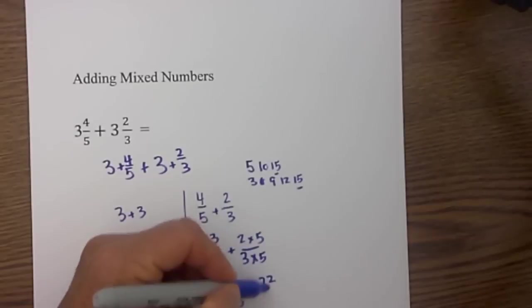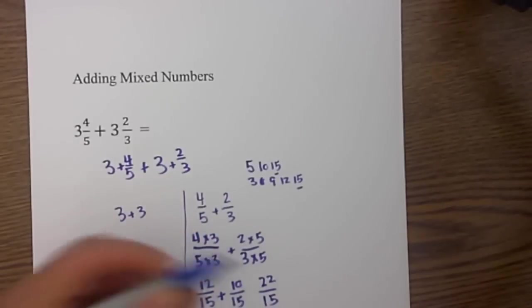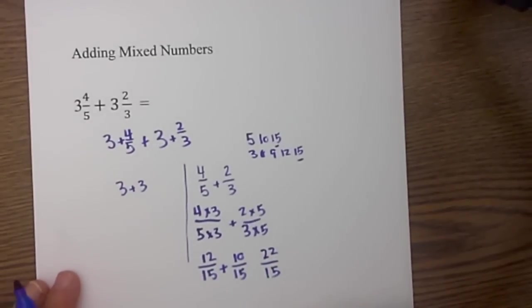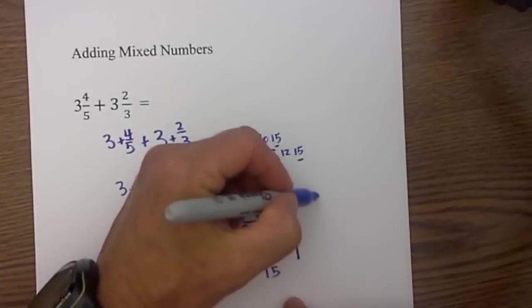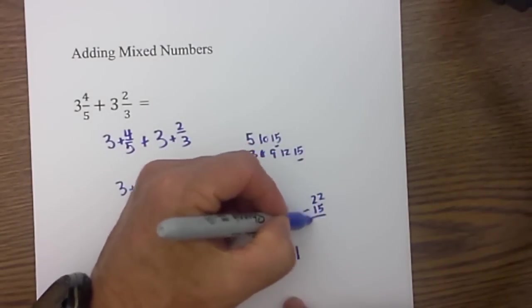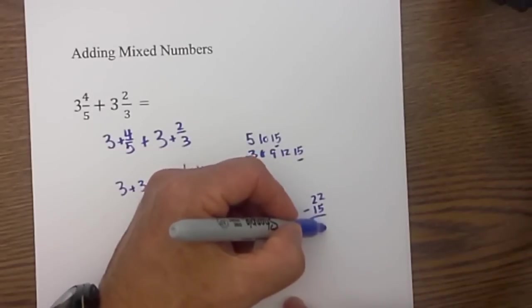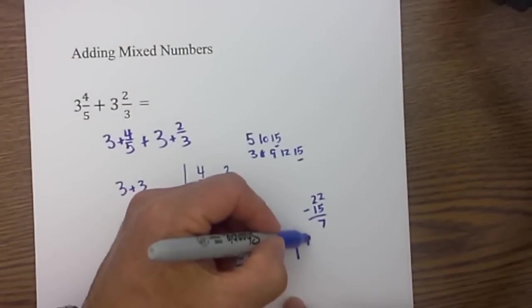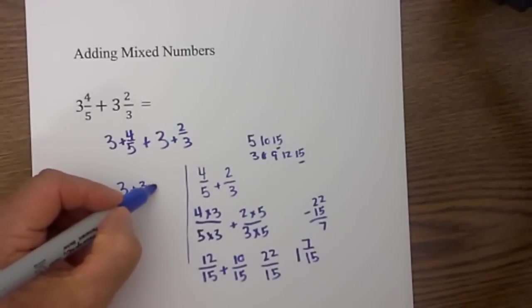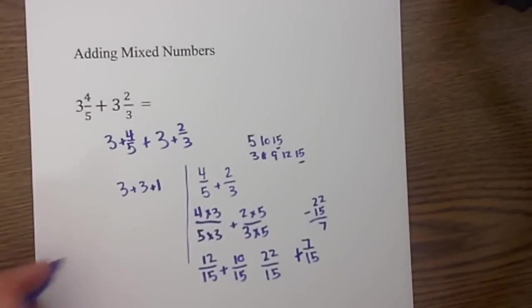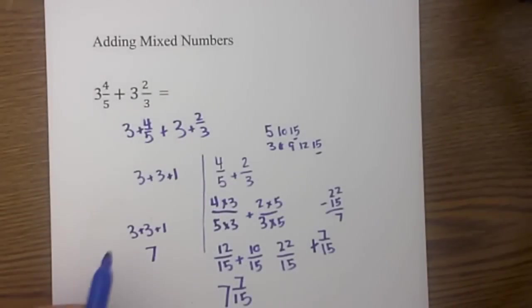So now I have an improper fraction and I will convert it to a mixed number. 15 goes into 22 1 time and 22 minus 15 is equal to 7. So you have 7 fifteenths. Now I will cross this out so we don't get confused so I have 3 plus 3 plus 1 is equal to 7 and move to 7 fifteenths over so we have 7 and 7 fifteenths.